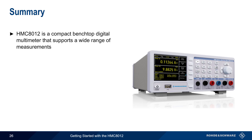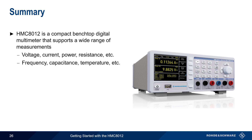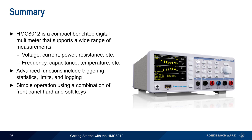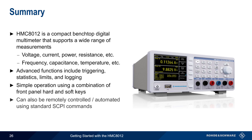Let's end with a brief summary. The Rohde & Schwarz HMC 8012 is a compact benchtop digital multimeter that supports a wide range of measurements, including basic functions such as voltage, current, power, and resistance, but also measurements of frequency, capacitance, temperature, and more. The HMC 8012 also supports advanced functions such as triggering, statistics, limit testing, and logging of measured values. It has a high contrast display and can be configured through its front panel using hard and soft keys, or remotely controlled using the free HME Explorer software utility or industry standard SCPI commands.